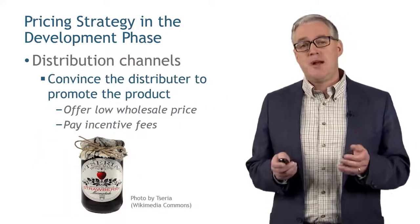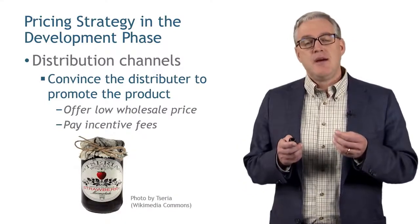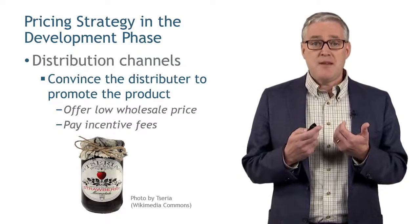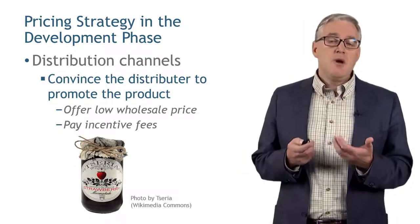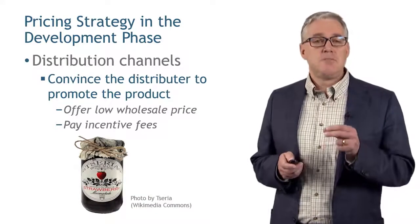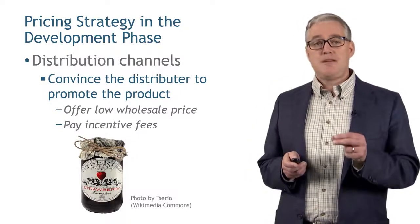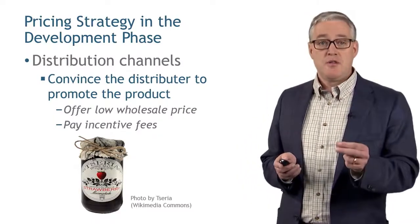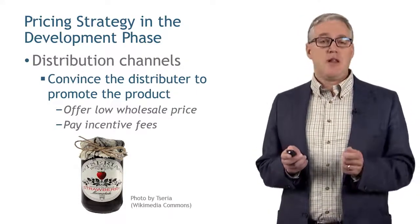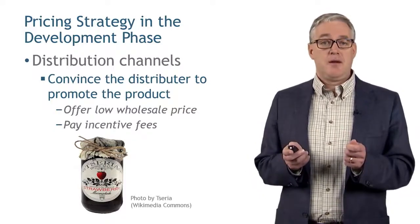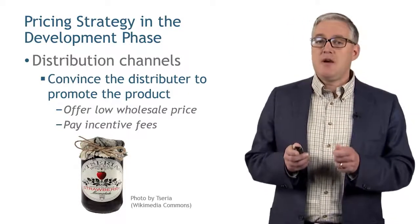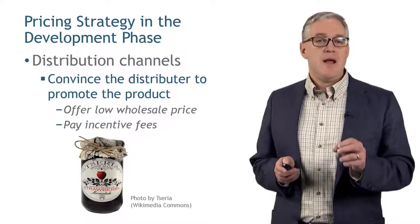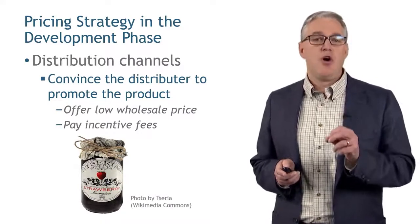Finally, what if you have a good product — like a high-end jam or jelly — but it's entering a saturated market with a lot of players? For you it's the development phase, but the market is already crowded. In that situation, you really need to focus on the distribution channels. You'll probably have to offer a very low price to distributors like a grocery store, since they have many other products they could offer instead of yours. Give your distribution channel a high margin, and you may even pay them incentive fees for selling a lot of your product. The product lifecycle is important, and the tactics you take depend on the specific characteristics of your product — that's true in the development phase as with all other phases.